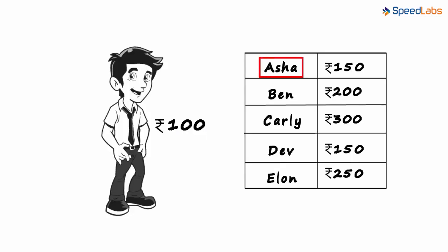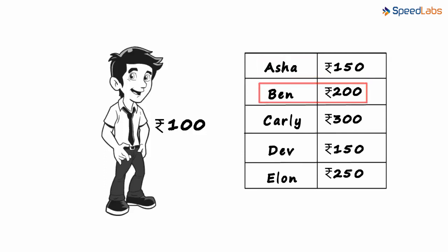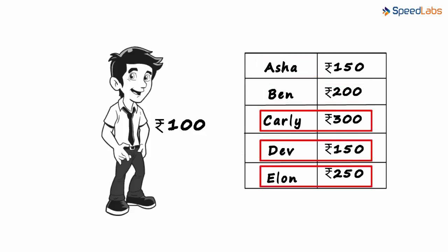Asha is given 150 rupees per week. Ben is given 200 rupees per week, and so on.